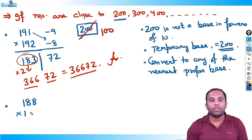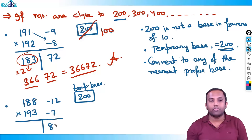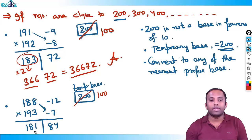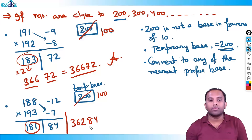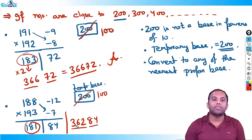One more example: 188 into 193. Temporary base 200. Differences: minus 12 and minus 7. Product: 84. Cross addition gives 181. Convert base 200 to proper base 100 by doubling the left part: 181 doubled is 362. Right part is 84. The answer is 36284.